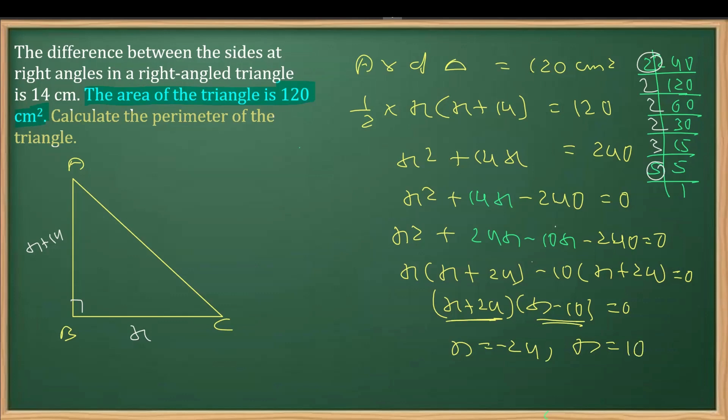Now what do we know? This cannot be a factor, value of x, as x is the length and length cannot be negative, so we'll go for x as 10. Now once we get the value of x over here, we can write down the values.